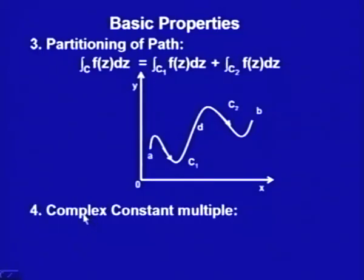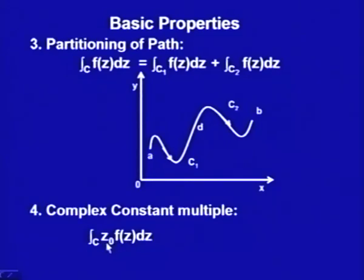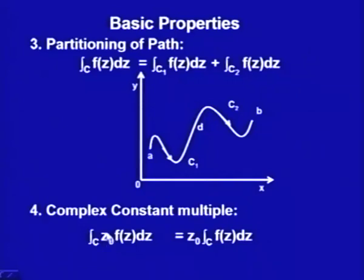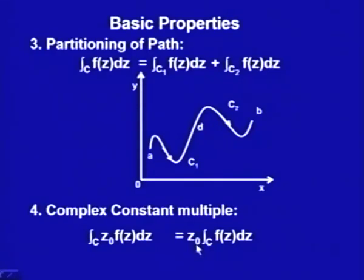Having established linearity with real constants, if we have a complex constant z₀ as a multiplier, we can show that the integral of z₀·f(z)dz over C equals z₀ times the contour integral of f(z)dz over C — that is, any complex constant can be taken outside the integral sign. Combining this with the linearity property, we see that linearity holds for complex constants as well.